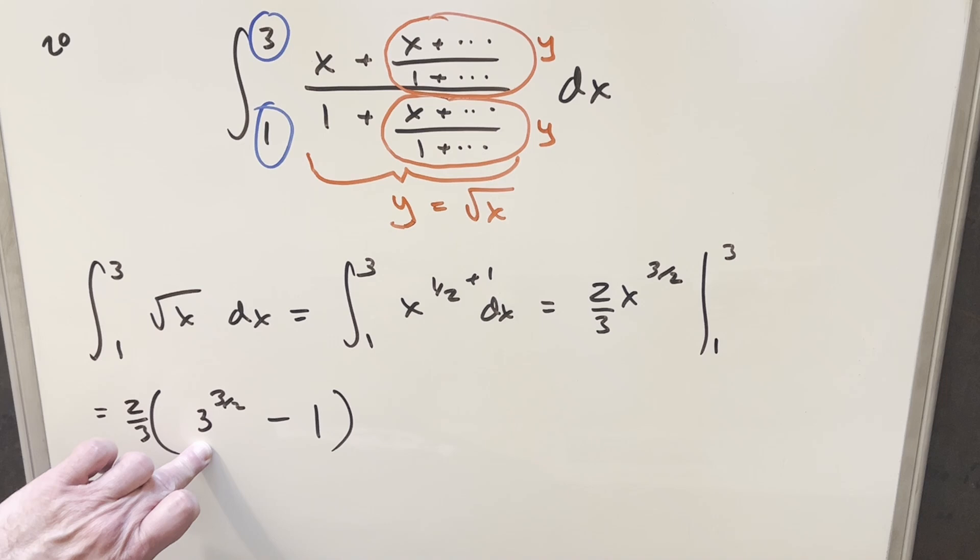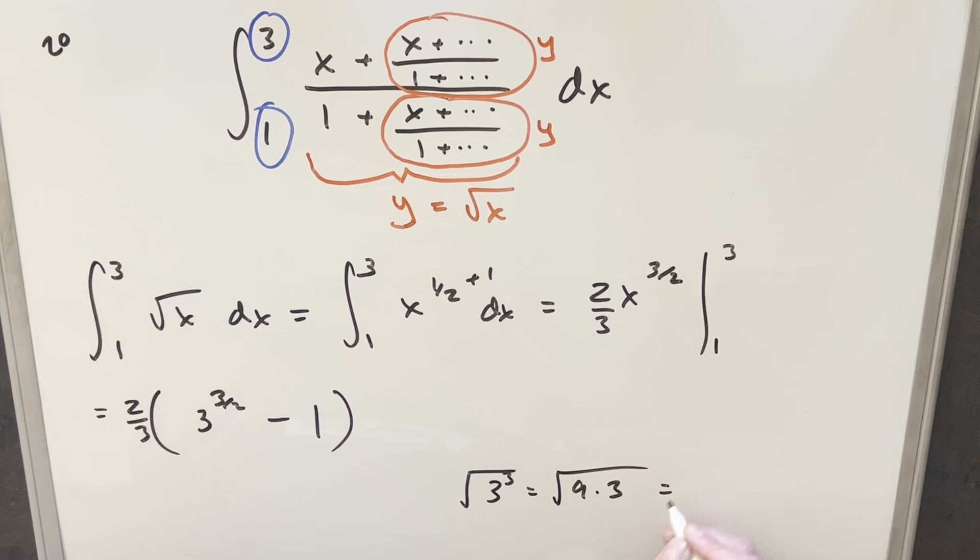But now for three to the three halves, let's just simplify that really quick. I could write it as the square root of three cubed, which is 27, which is the square root of 27, which I could break up like square root of nine times three, but we know the square root of nine is going to be three. So I can write this as three square root of three.